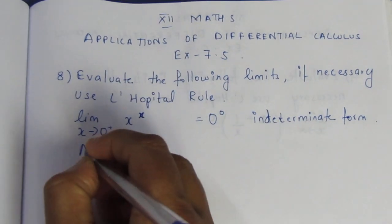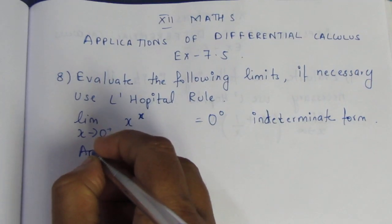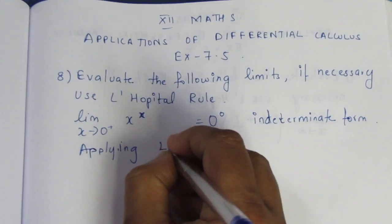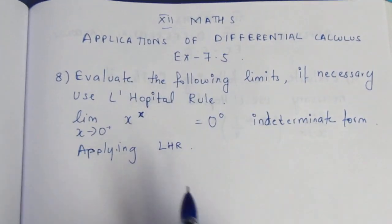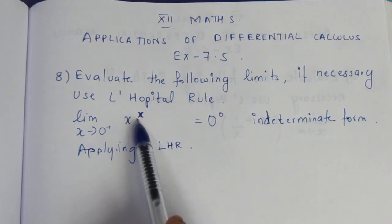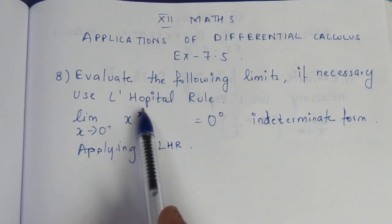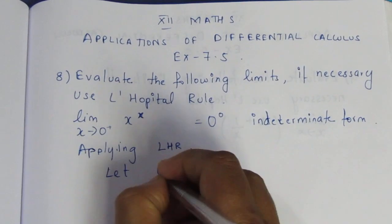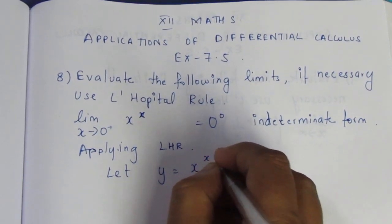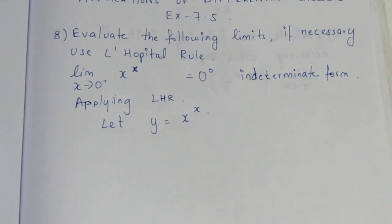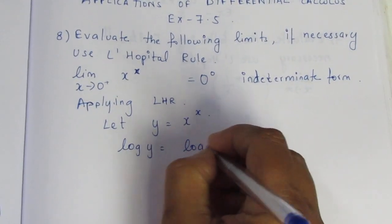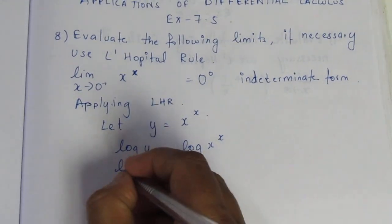Since we have an indeterminate form, we apply L'Hôpital's Rule. We take the logarithm: let y = x^x, so log y = x log x. We work with this logarithmic form.